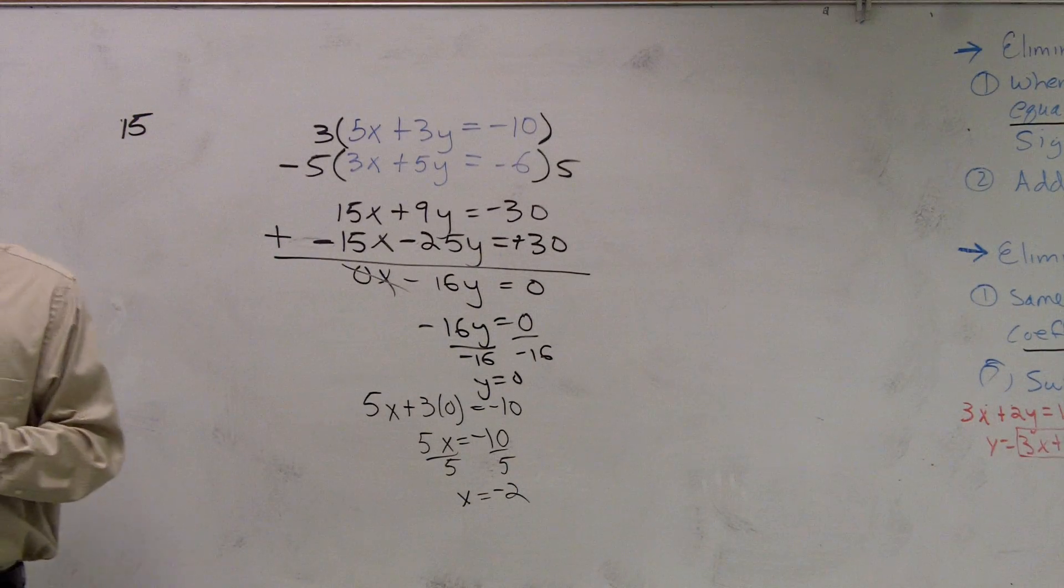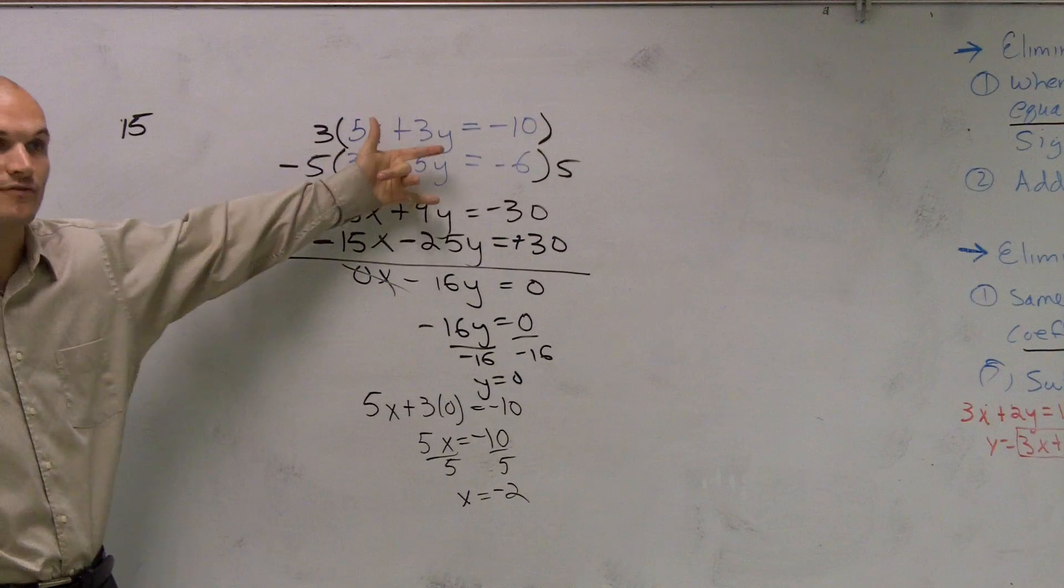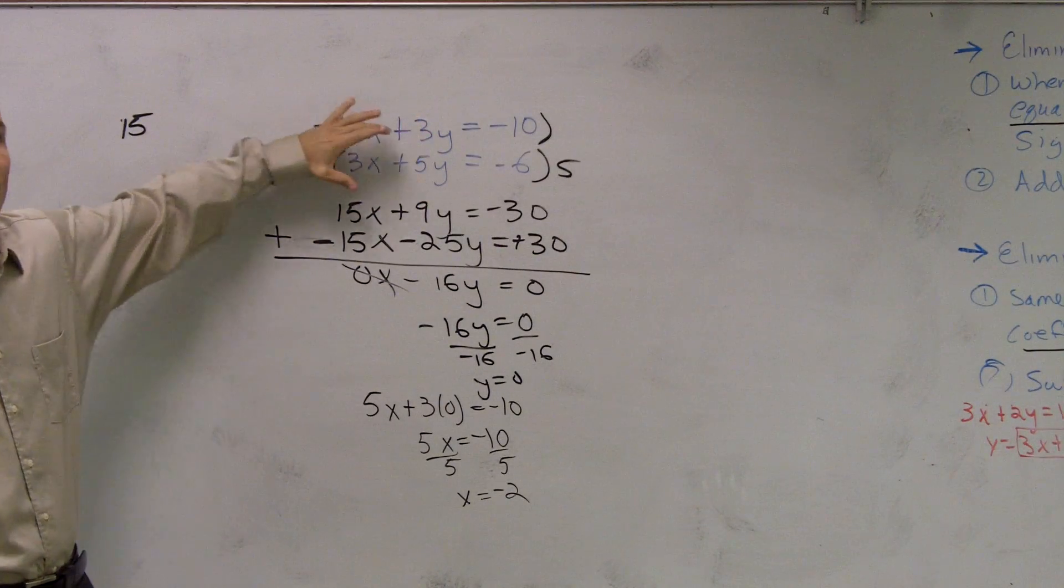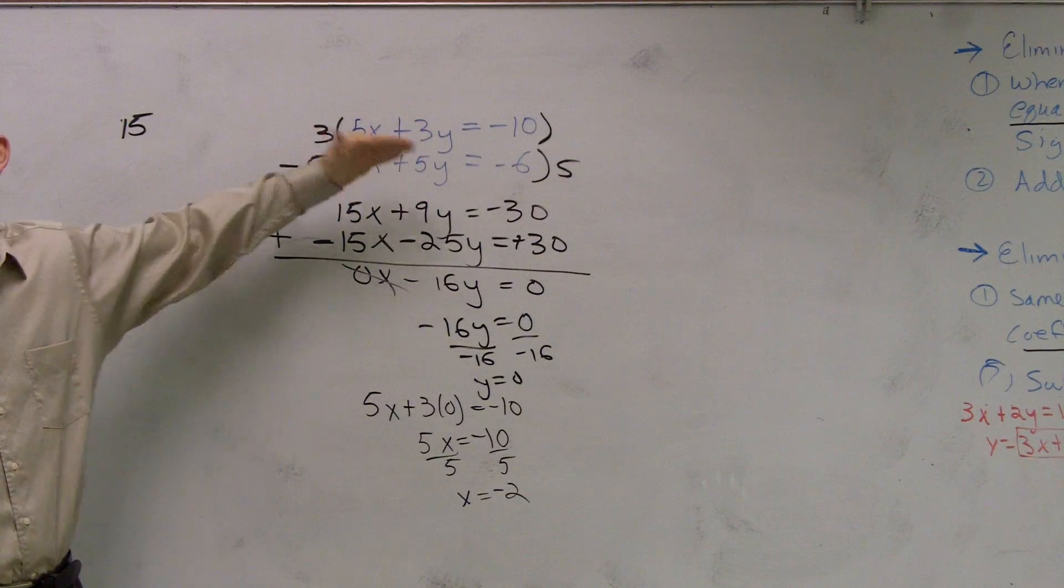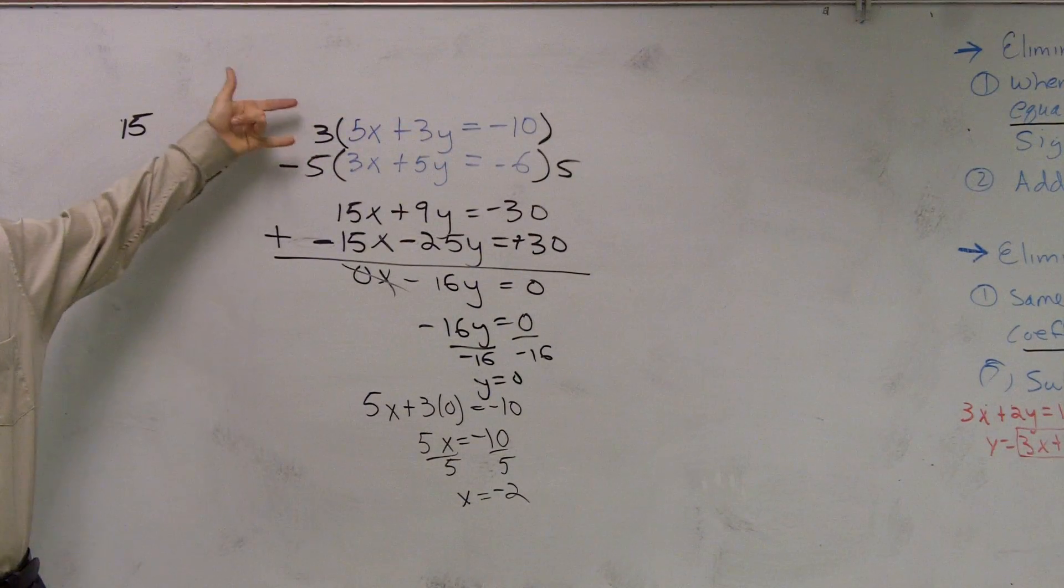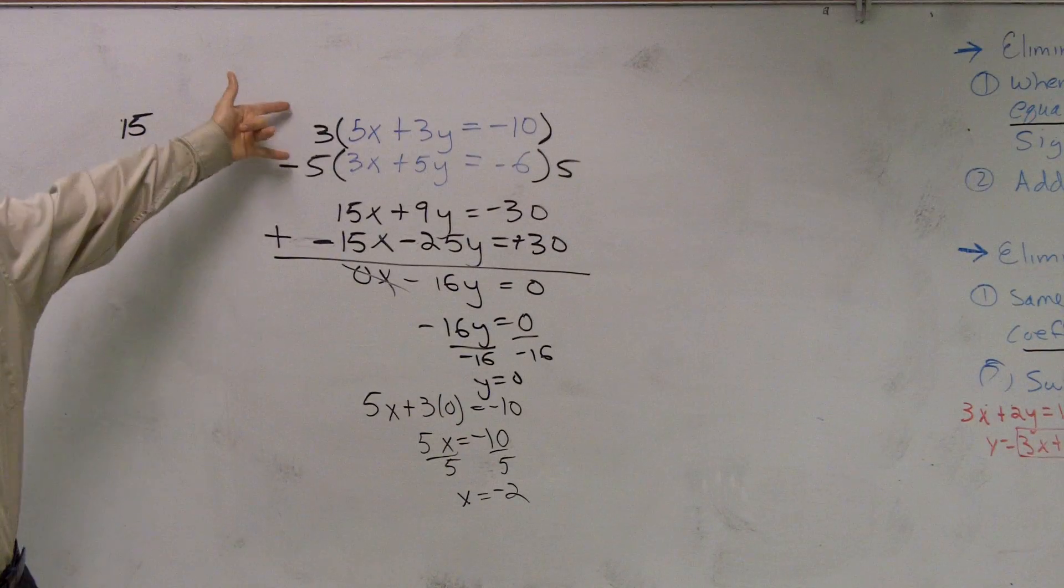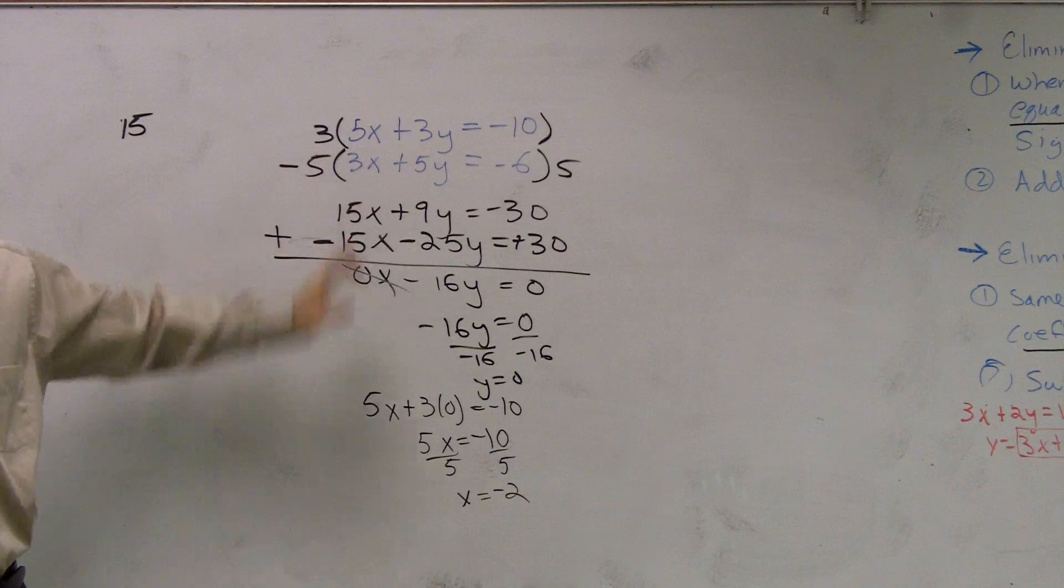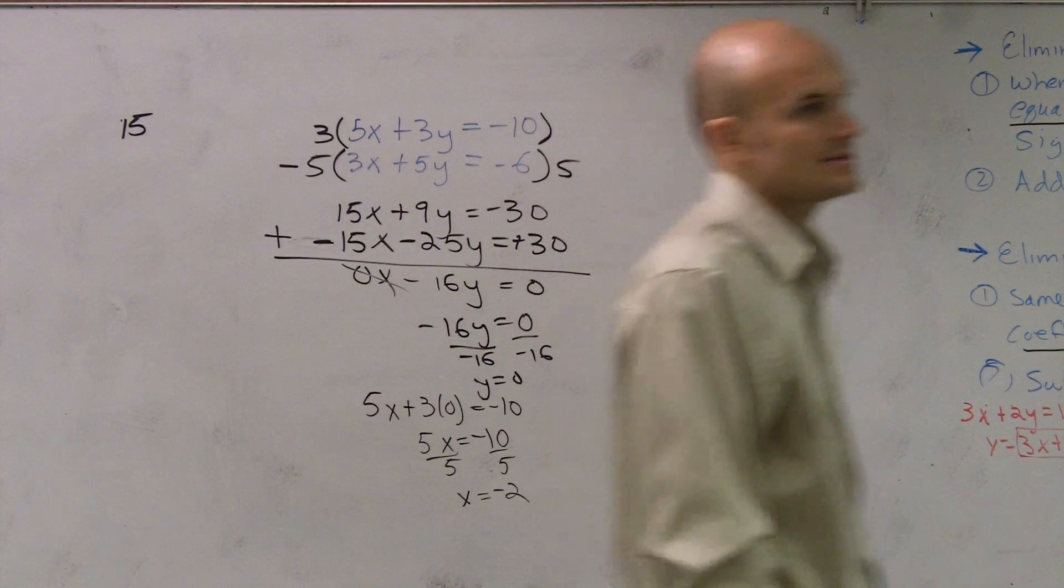So just remember, if you don't have the same number in front, try to look to multiply multiples of just one equation. But it might be possible you might have to multiply by two different multiples for your equation, so you have to get the same number in front. And that's it.